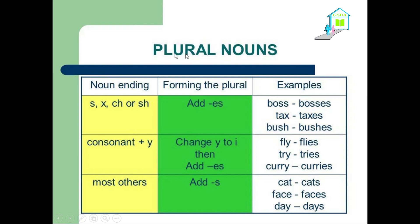We need now to move to the plural of nouns. We have here three types of nouns. We have nouns which end with S, X, CH, or SH — we add just ES at the end. For example: boss → bosses, tax → taxes, bash → bashes. Those words end in S, H, X, or SH.